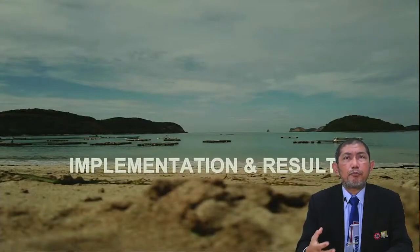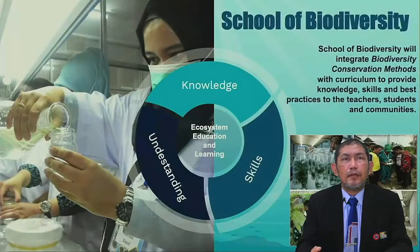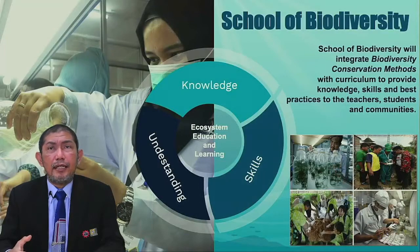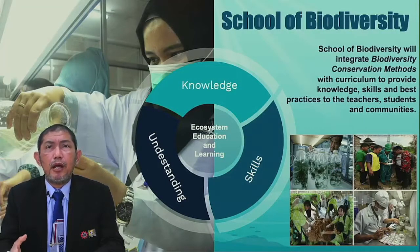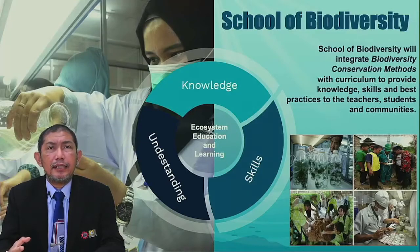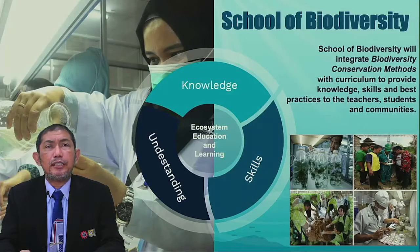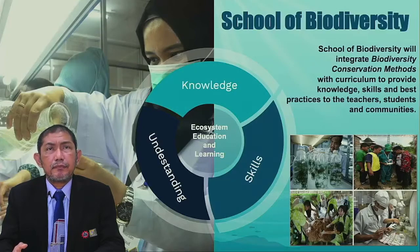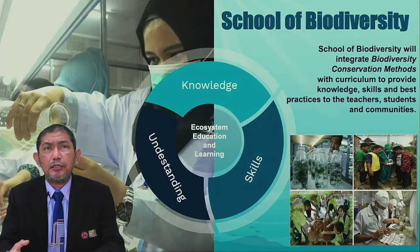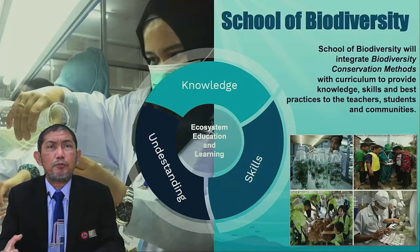Now, some information on implementation and results of our programs. As a realization of safe biodiversity, Simeo Biotrop carried out a School of Biodiversity, integrating knowledge, skills, and understanding of ecosystem education and learning as the basis. The School of Biodiversity provides a direct link to the curriculum based on biodiversity conservation methods, offering improvement in hand skills, soft skills, and higher-order thinking skills for students and teachers.